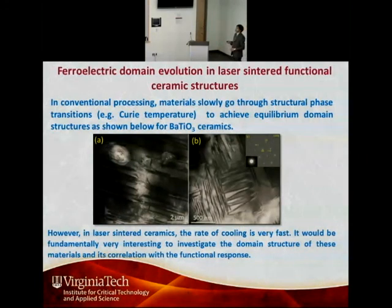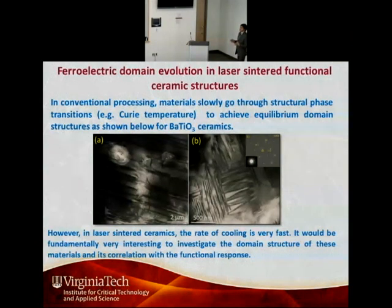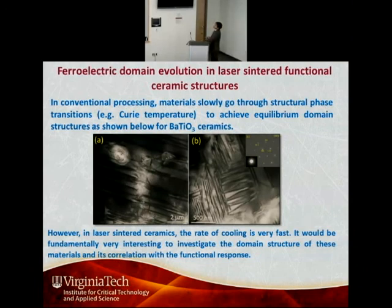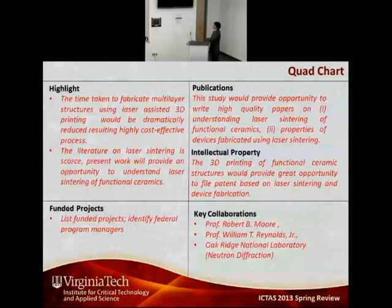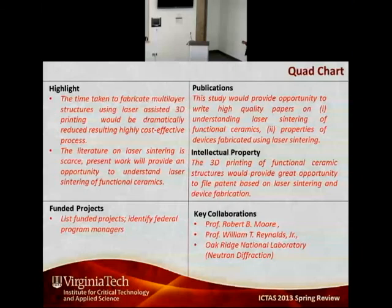There is a binder. We put the system through binder burn-out, which takes a long time — we have to slowly heat the system to avoid porosity in the material, and then fire it. This is the tape casting material system. The scientific part of this project will be to investigate the domain structure, as 70% of the properties of the material are controlled by these domain properties. Using rapid sintering, we don't get time for the domains to grow to their equilibrium shape, so it will be very interesting to study the effect of these microstructural changes on the properties.